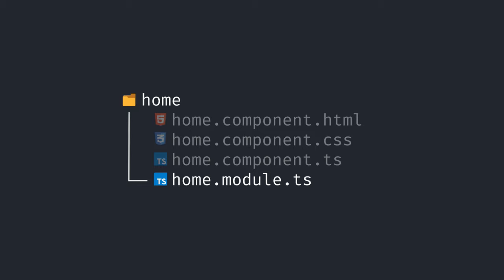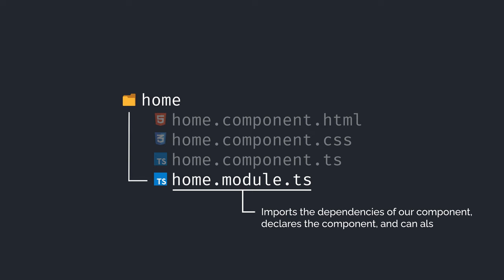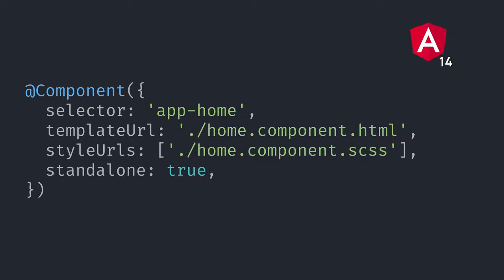This last file imports the dependencies of our component, declares the component, and can also define some providers. In Angular 14, we can do all that directly in the component without needing an ng-module. To do that, we just need to set the standalone property in our component to true.